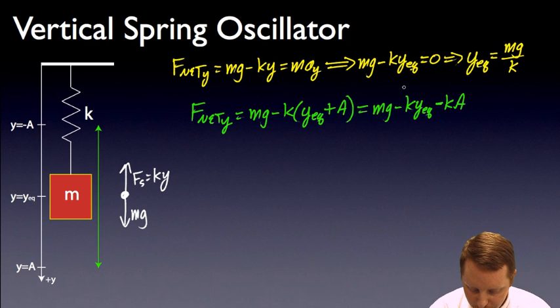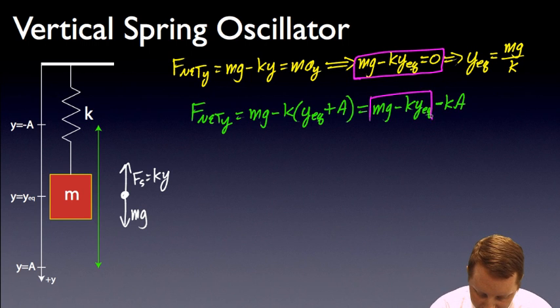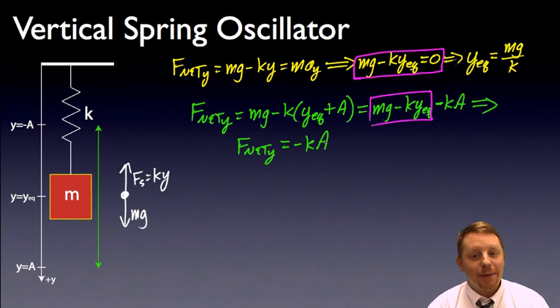But if you remember, we just proved up here mg minus ky equivalent equals 0. So that must be equal to 0. So we could write the rest of our equation then as net force in the y direction is equal to minus ka. That's the same analysis we would do for a horizontal spring system with spring constant k that's displaced some amount a from its equilibrium position.